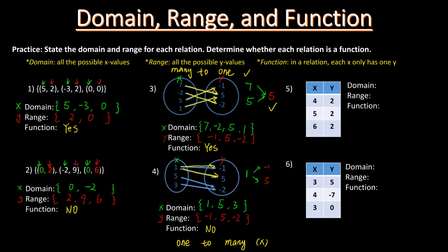Let's have a quick summary. In a relation, if we have many-to-one (many x-values to one y-value), then it's a function. If we have one-to-many (one x-value to many y-values), then it's not a function.